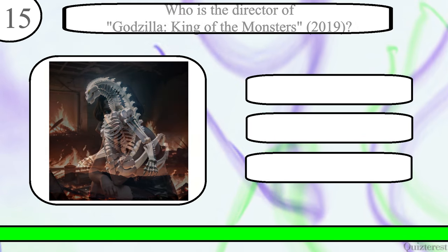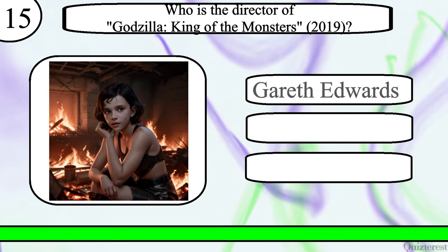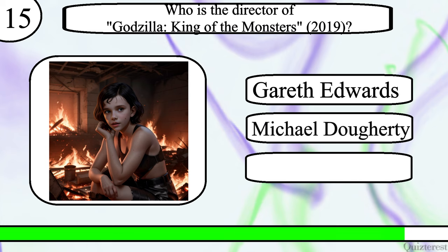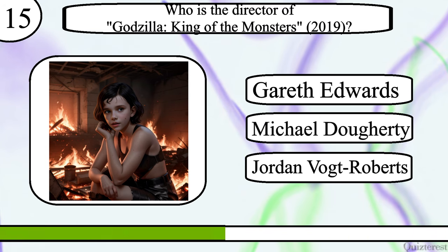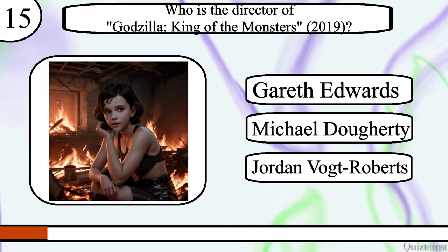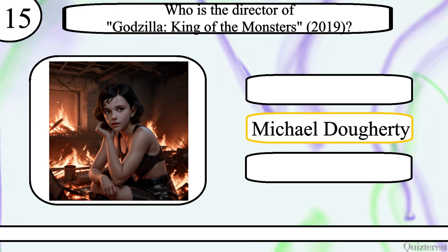Question 15. Who is the director of Godzilla: King of the Monsters (2019)? Gareth Edwards, Michael Dougherty, or Jordan Vogt-Roberts? The correct answer is Michael Dougherty.